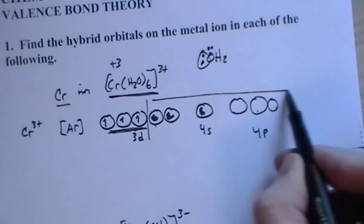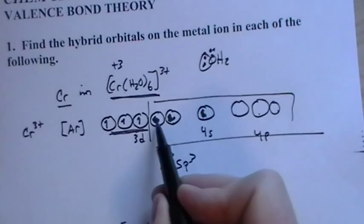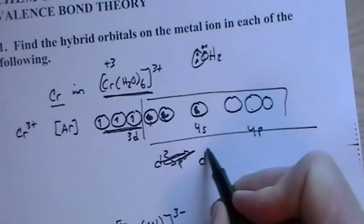So we start here. One, two, three, four, five, six. So this would be d2sp3. Because we're going in order. There's two d's, one s, three p's. Let me rewrite that. So d2sp3.